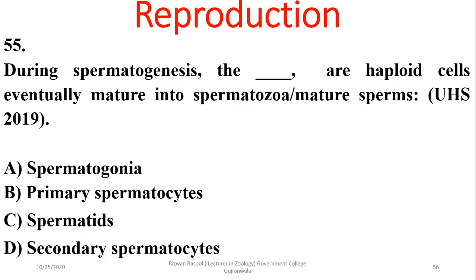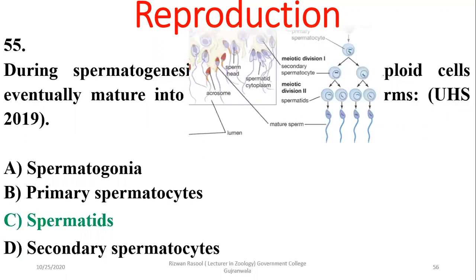Question 55: During spermatogenesis, the haploid cells that eventually mature into sperms or spermatozoa are spermatids. Charlie is the right option.